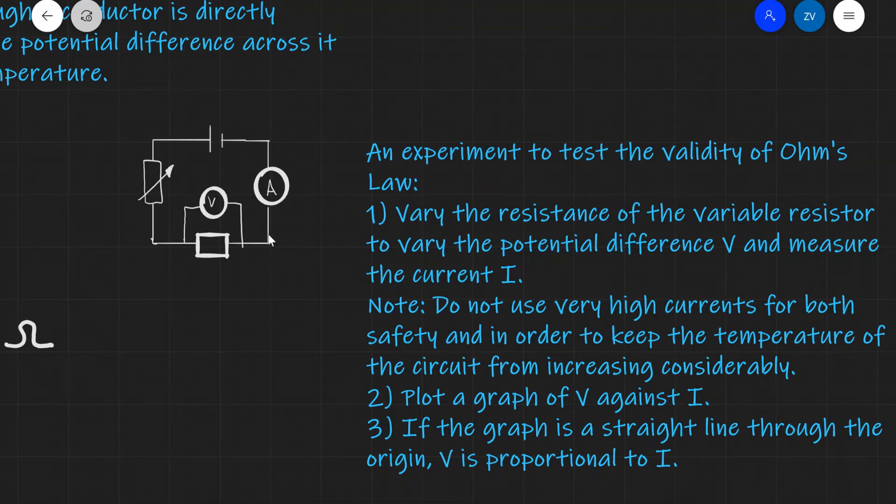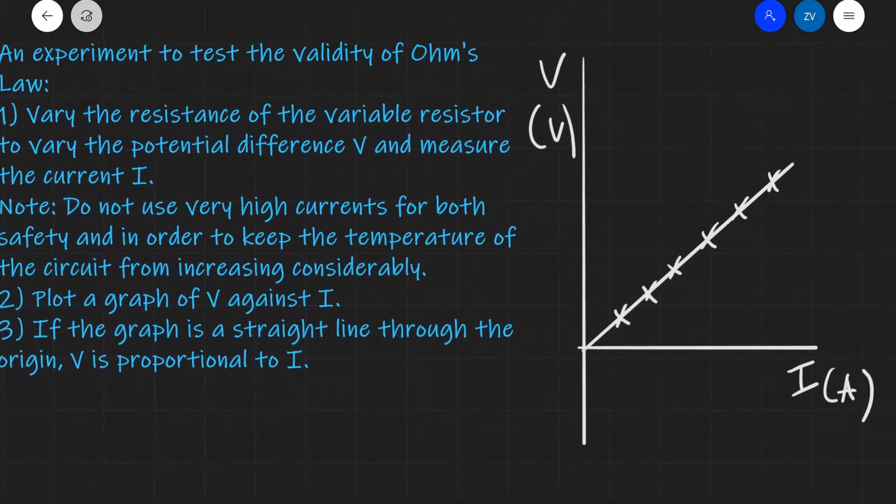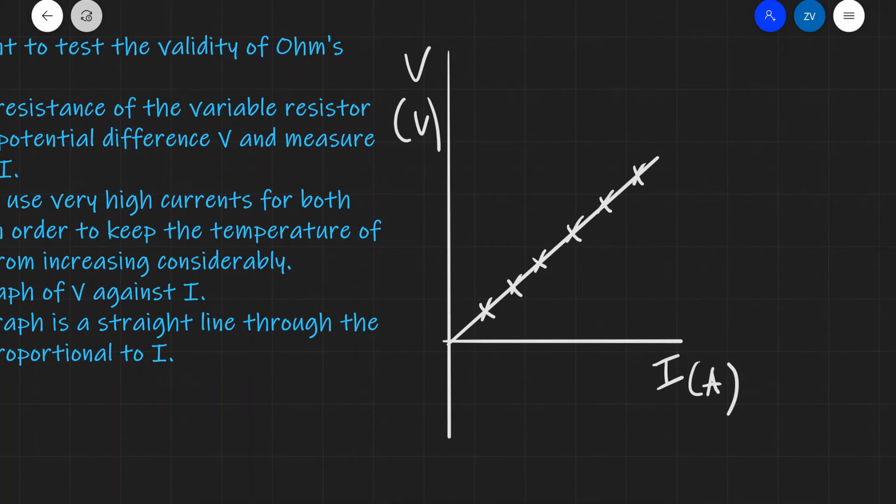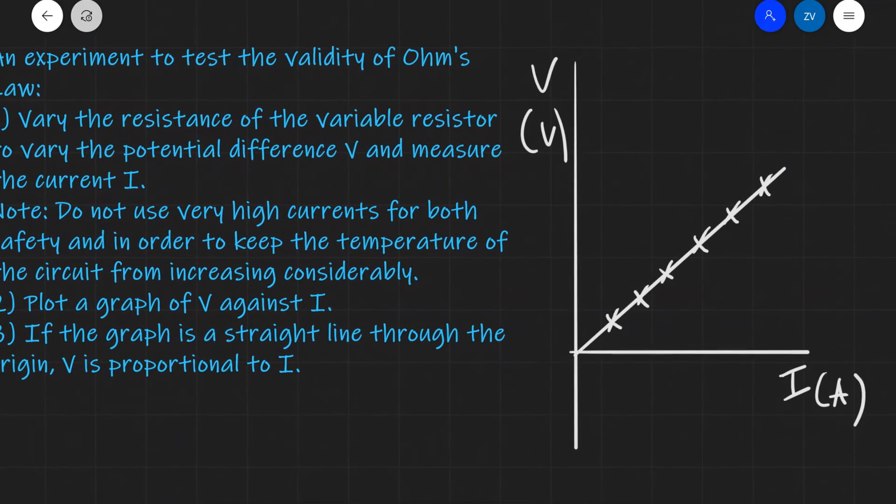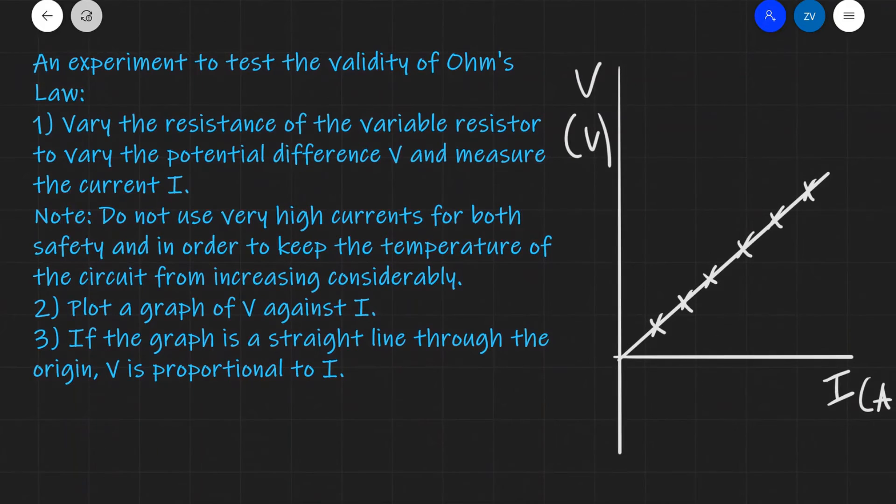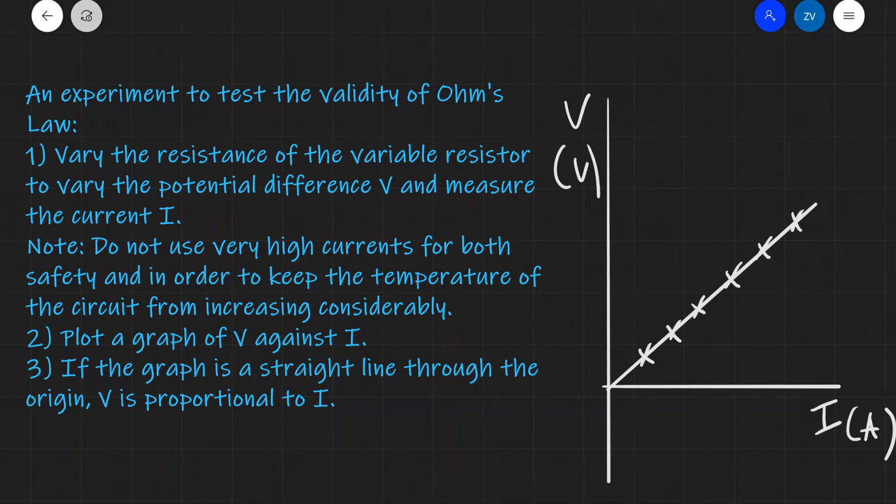After we've taken readings of the potential difference V and the current I, we're going to plot a graph of V against I. Now if that graph is a straight line through the origin, that tells us that V is proportional to I, which tells us that Ohm's law is in fact confirmed.